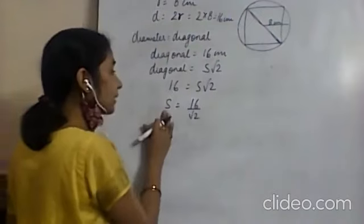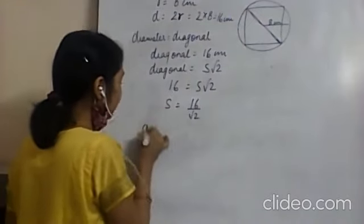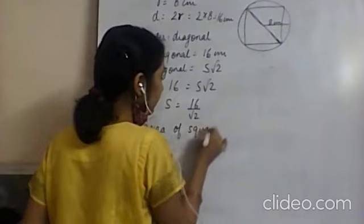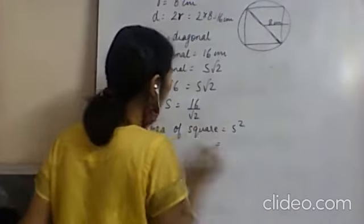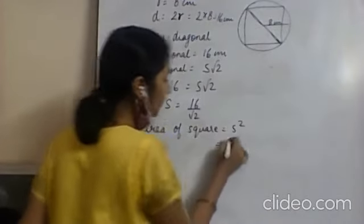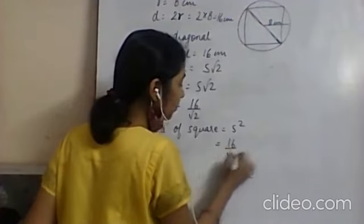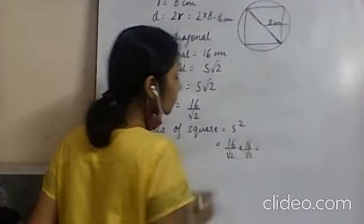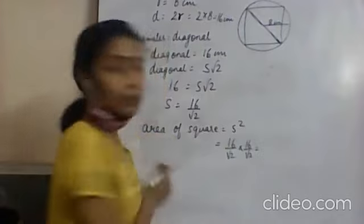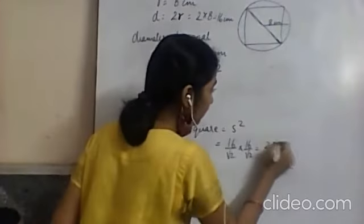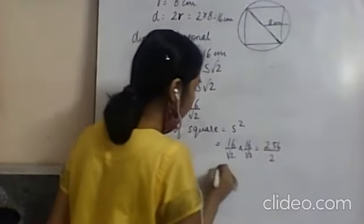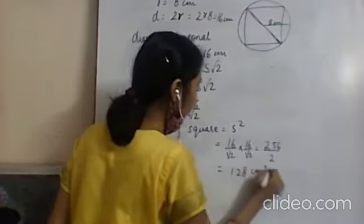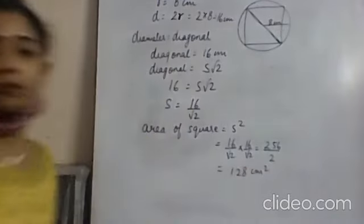Area of square equals side squared equals (16 upon √2) squared equals 16 into 16 upon 2 equals 256 upon 2 equals 128 cm². This is the area of the largest square inscribed in the circle.